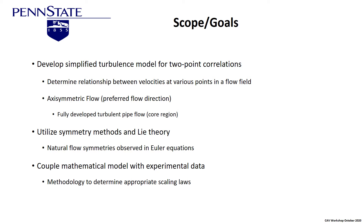We need to determine a relationship between the velocities at various points in the flow field. We're starting with a relatively simple fully developed pipe flow in the axial direction. From undergraduate pipe flow studies, when flow is fully developed it doesn't change much — there's a core region in the middle and boundary layers toward the edge. We're interested in the core region, and we're going to use Lie theory, developed around 1900, to develop symmetries based on group theory.